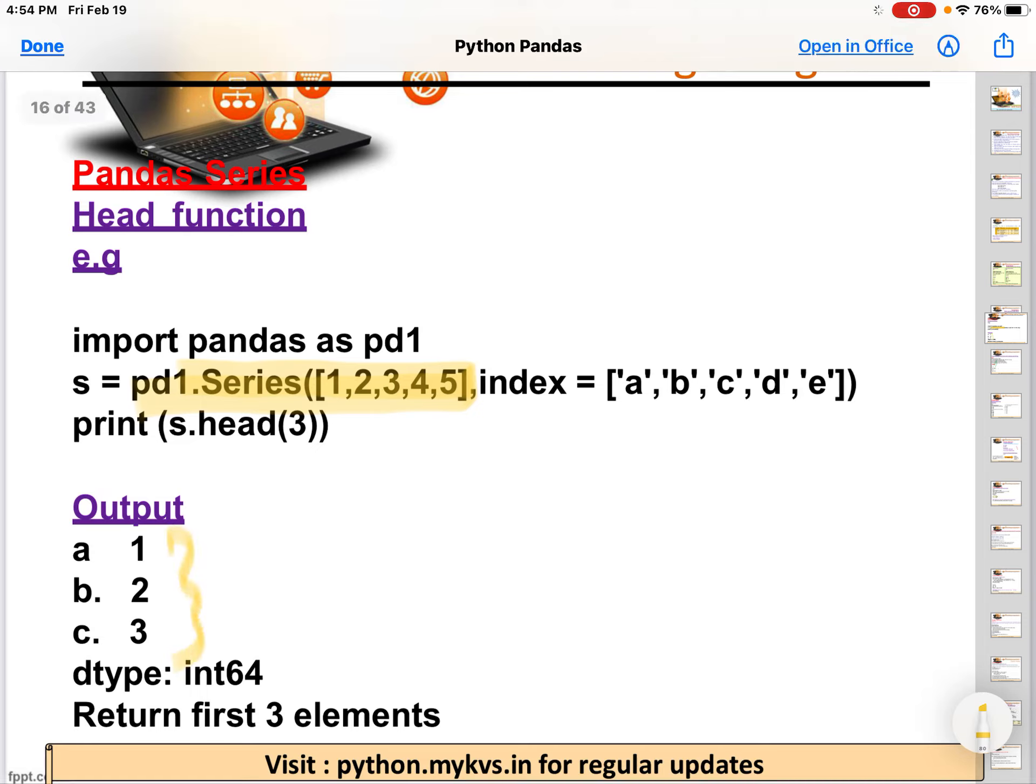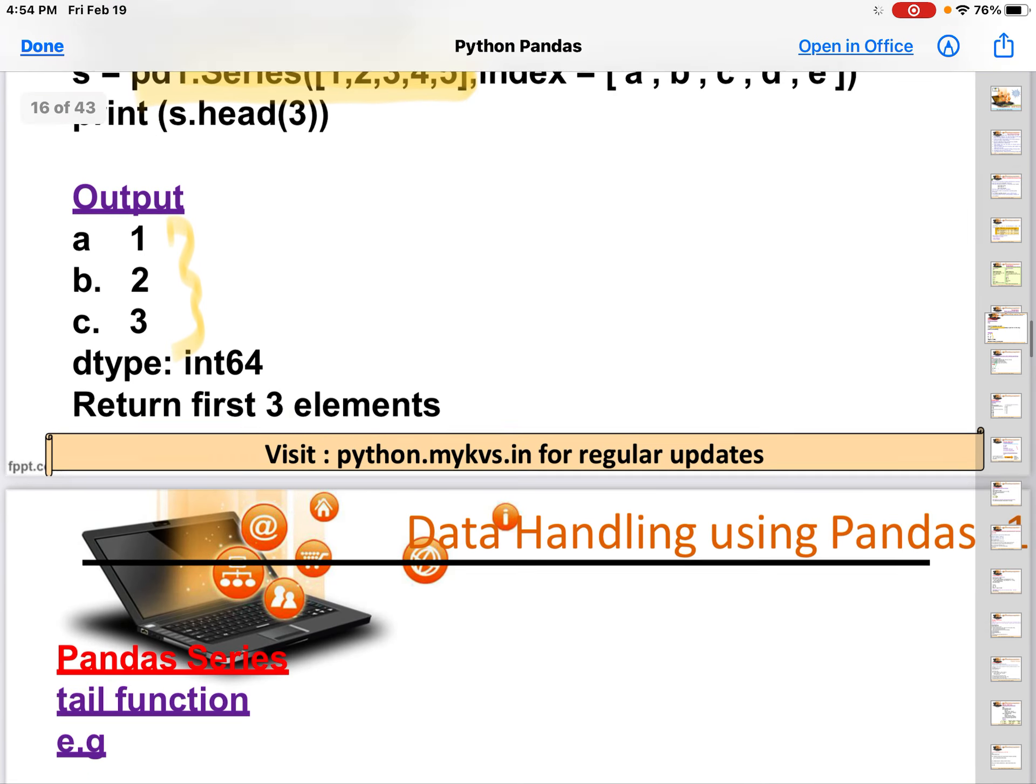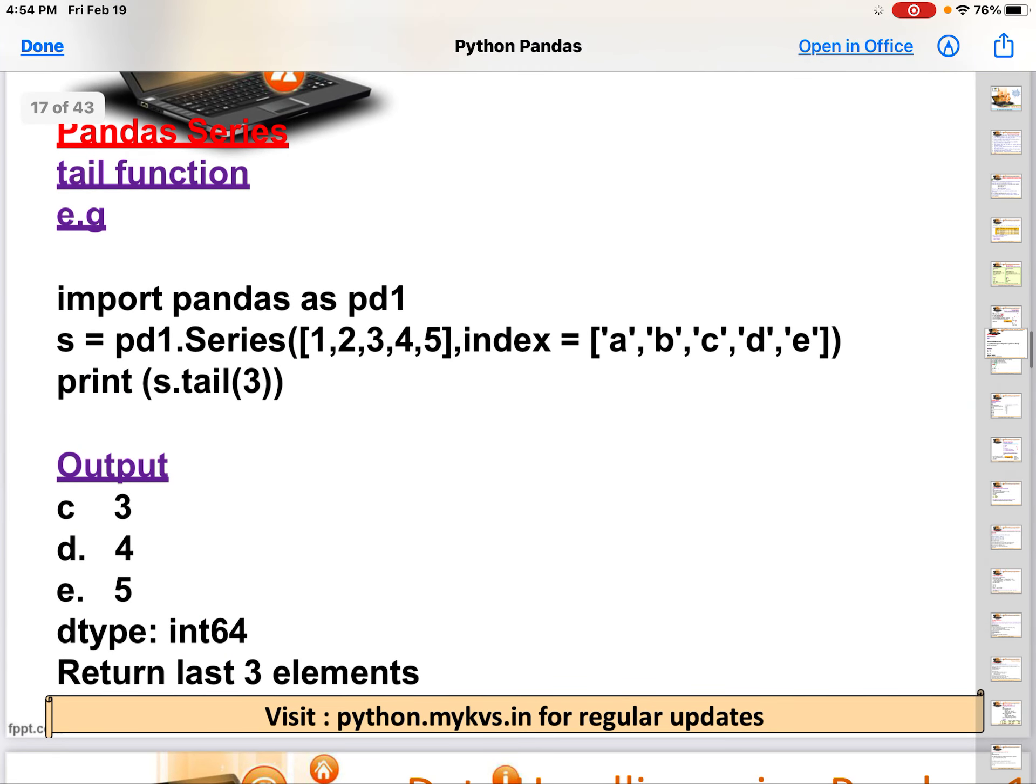Now there is another Pandas function that returns the bottommost or the last values, which is called tail. So pd1.Series([1,2,3,4,5], index=['a','b','c','d','e']), now tail(3), that means the last three elements, that means 3, 4, 5. Okay, 3, 4, 5 will be the output.